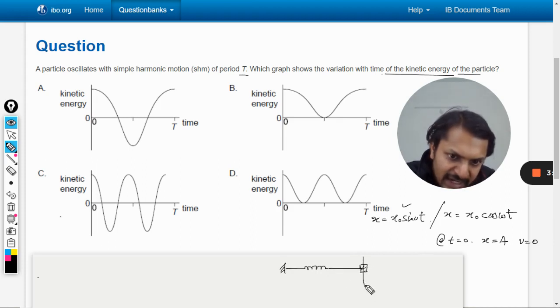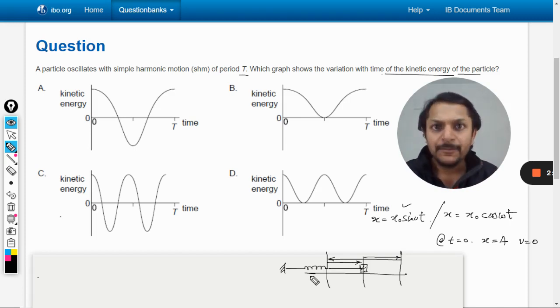Let us talk in terms of spring mass system. The motion starts from the mean position, it goes to this extreme, then it goes to the other extreme, and then it comes back to the mean position. So now we want to comment about the kinetic energy.